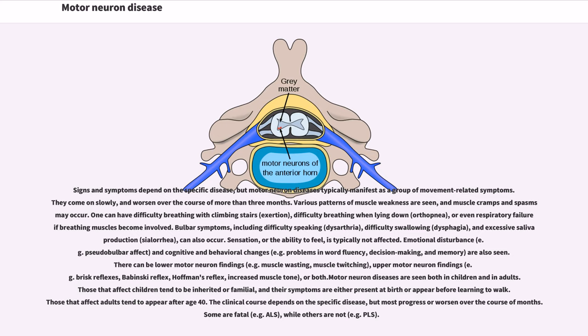There can be lower motor neuron findings, for example muscle wasting, muscle twitching, upper motor neuron findings, for example brisk reflexes, Babinski reflex, Hoffman's reflex, increased muscle tone, or both.